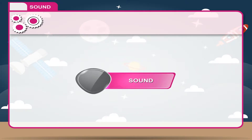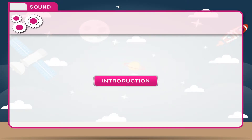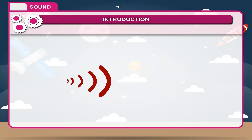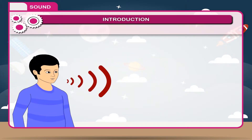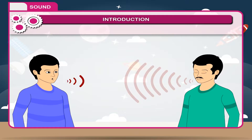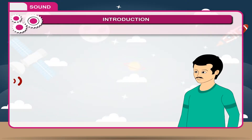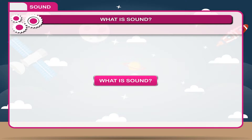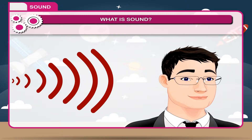Sound introduction. Sound is important to us — it helps us to communicate with one another. Without sound, we cannot talk to anyone. All sounds are different, but we can recognize the voices of our friends even if they are not visible to us. How does this happen? What is sound?